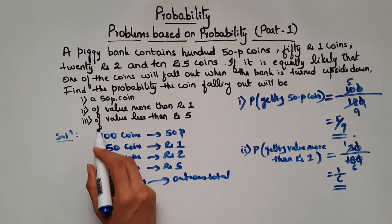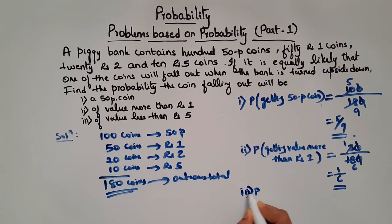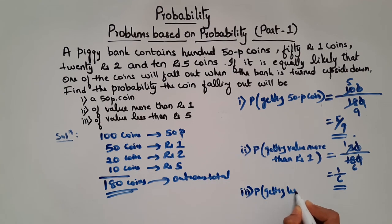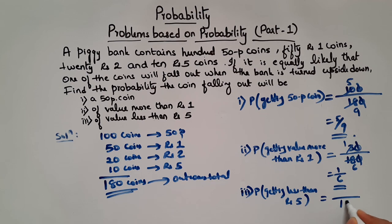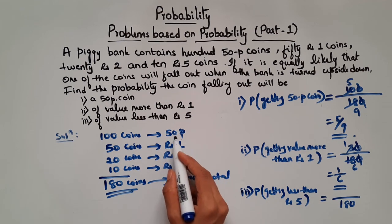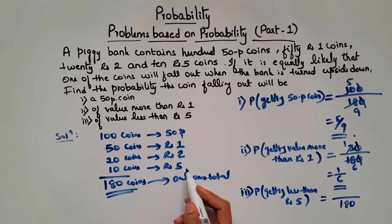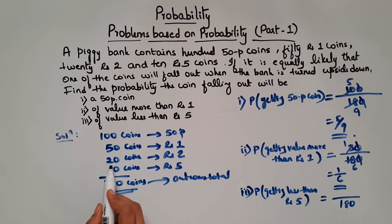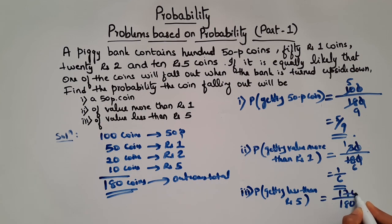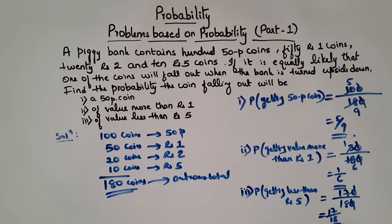Now the probability of getting value less than rupees 5: total possible outcomes is 180. Less than rupees 5 means 50 paisa, rupees 1, or rupees 2 coins — rupees 5 coins are not included. So we add 100 plus 50 plus 20, which gives 170 favorable outcomes. Therefore probability equals 170 by 180, which simplifies to 17 by 18. I hope this is clear. In this video we will solve some more problems under this topic. See you soon, take care.